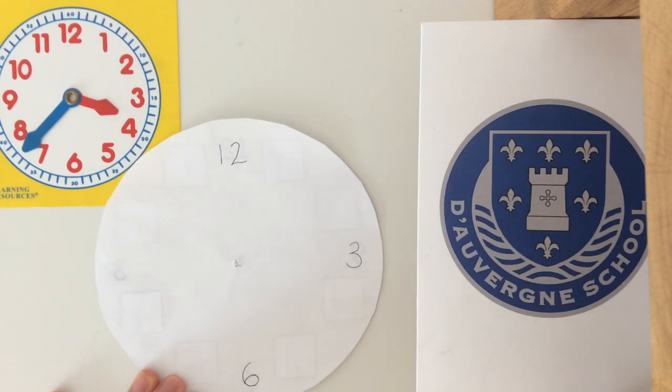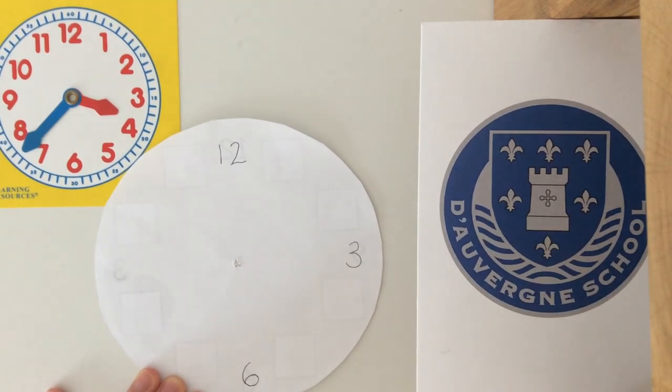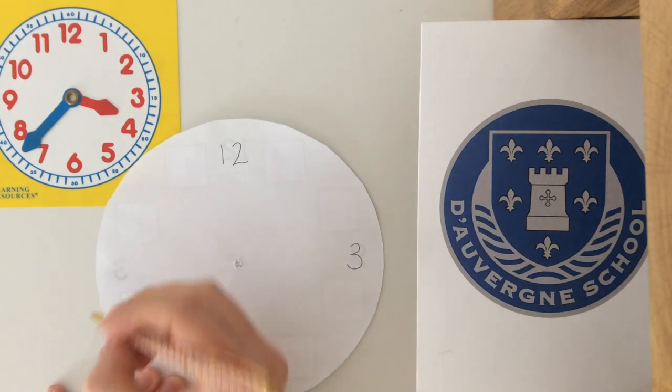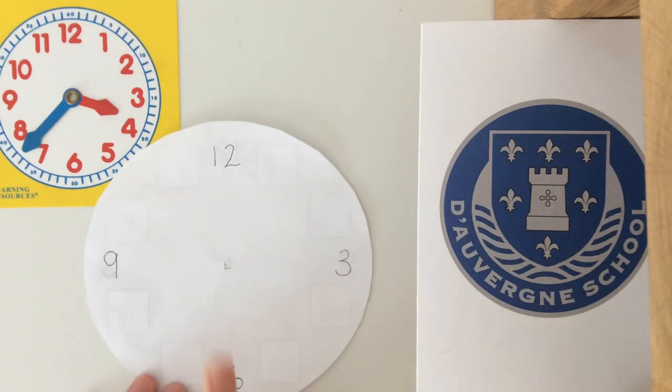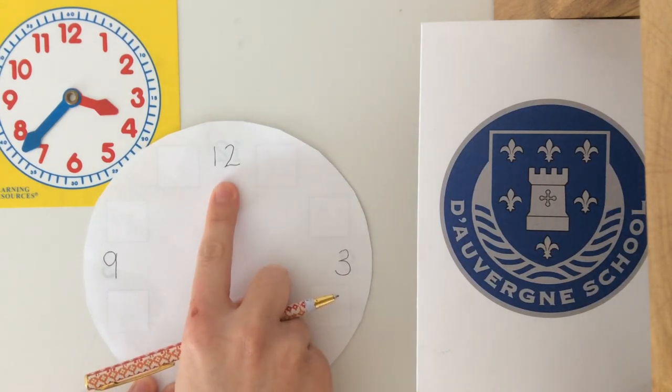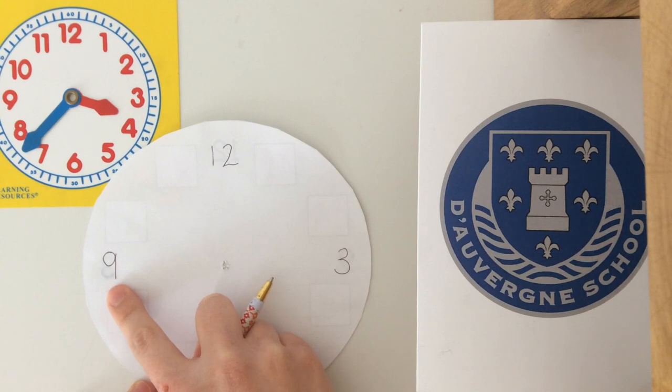And our 9 goes three quarters of the way around our clock face from our 12. See if you can find three quarters of the way around. We've got our o'clock, we've got our quarter past, we've got our half past, and our quarter to the next hour.